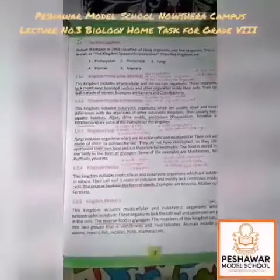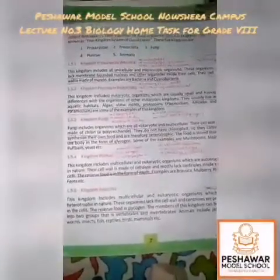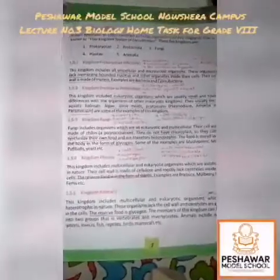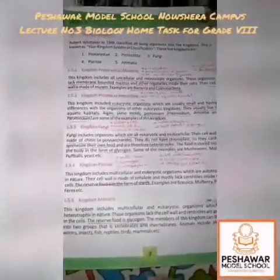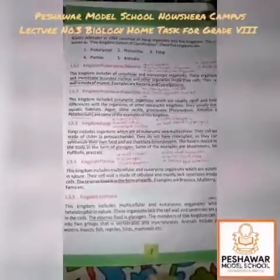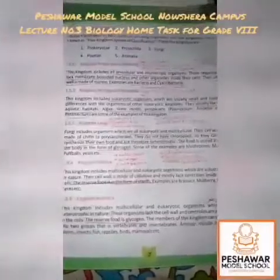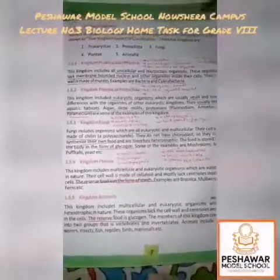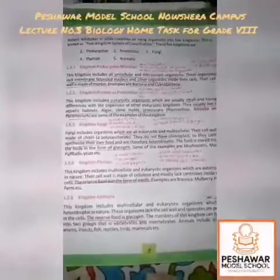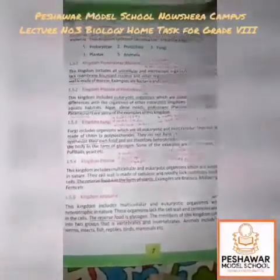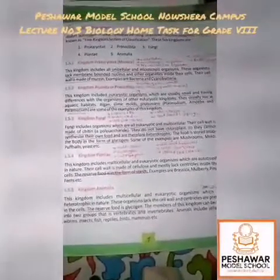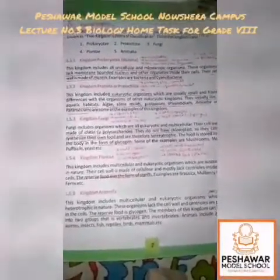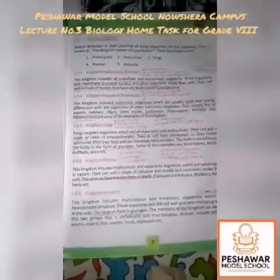Next is Kingdom Protista. This kingdom includes eukaryotic organisms which are usually small and differ from organisms of other eukaryotic kingdoms. There are two main types of organisms: prokaryotes and eukaryotes. Prokaryotes are unicellular, while eukaryotes can be unicellular or multicellular. Protists usually live in aquatic habitats — examples include algae, slime molds, and protozoans such as amoeba and paramecium. They are very small and cannot be seen with the naked eye.